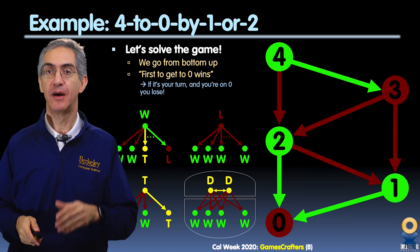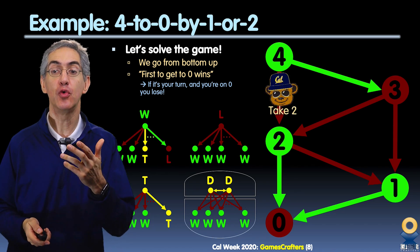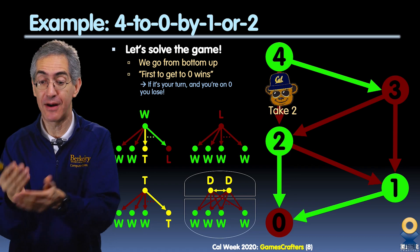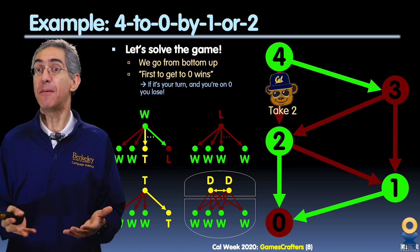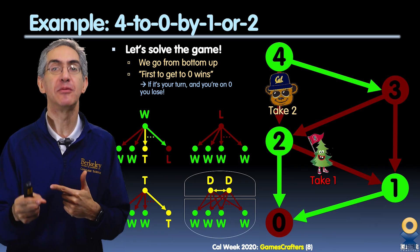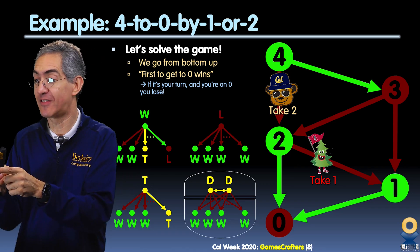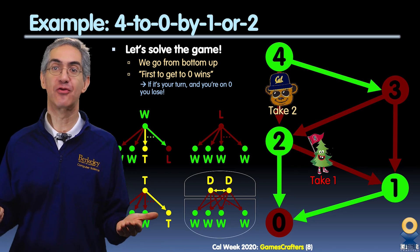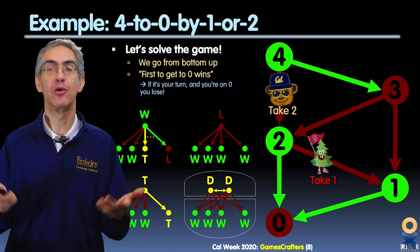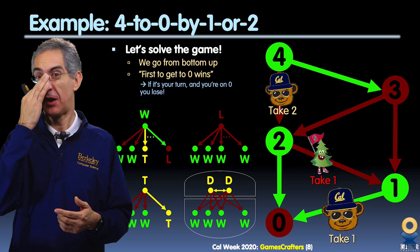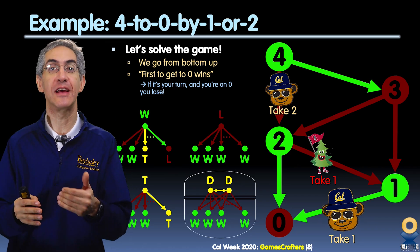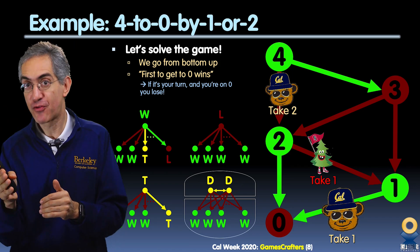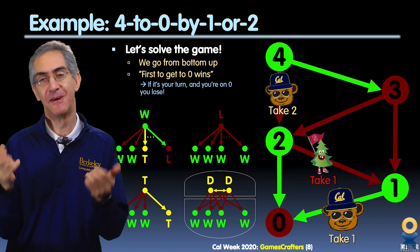Let's play one more game. Oski's at four but this time takes 2 — that's a fumble, a losing move, giving control to the tree. The tree is now the winning player, but it too makes a losing move — like recovering a fumble, running 98 yards, and fumbling on the one-yard line. Oski has control again, goes from 1 to 0, and wins the game. So you could watch this game — take two, take one, take one — and now we know it involved two fumbles in a row. Oski should have won, fumbled, the tree fumbled back, and Oski took it home.